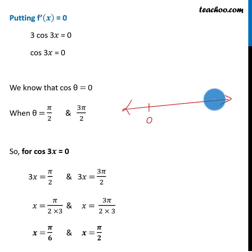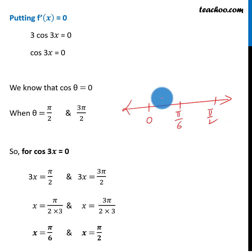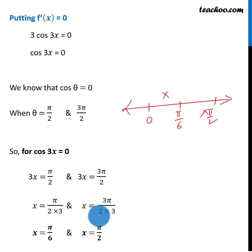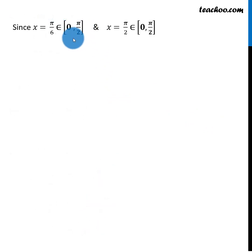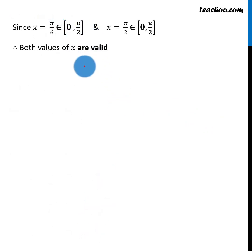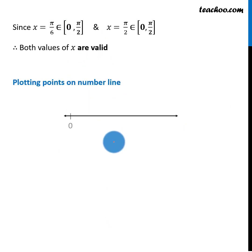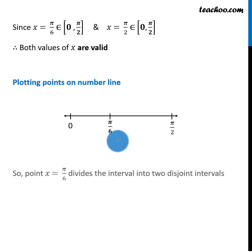The given interval is 0 to pi by 2. Our critical points within this interval are pi by 6 and pi by 2, giving us two sub-intervals. We will plot these on the number line to analyze the sign of f'x.